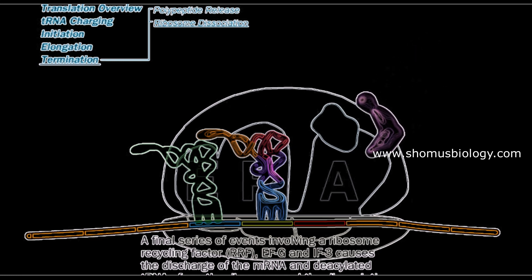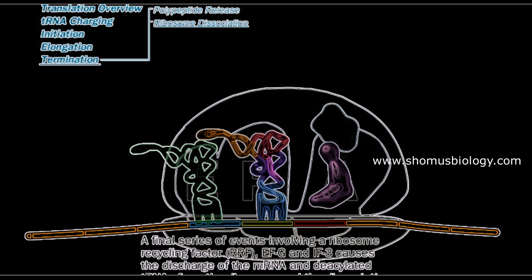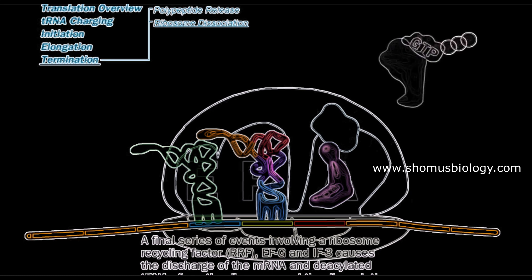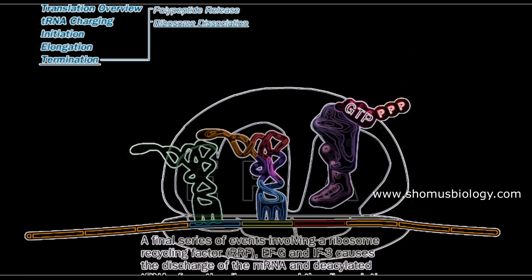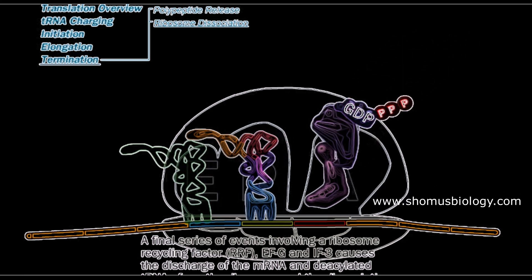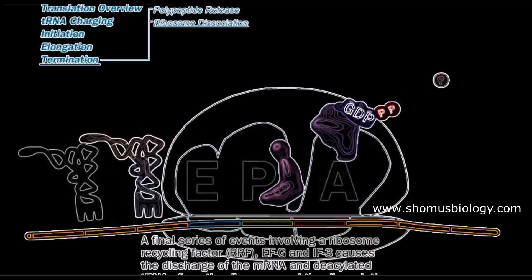We also need EF-G with GTP because we need to slide one last codon unit in order to release the tRNA.